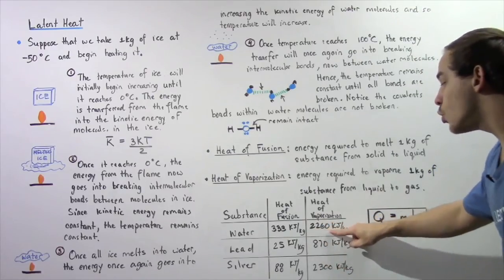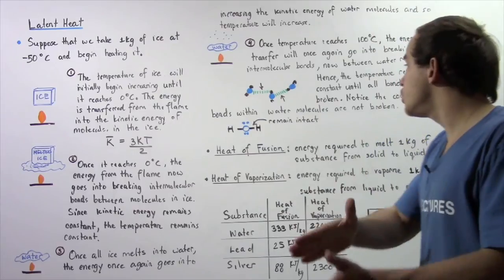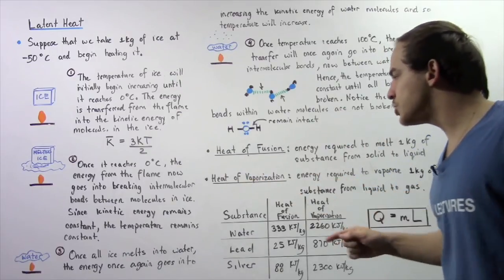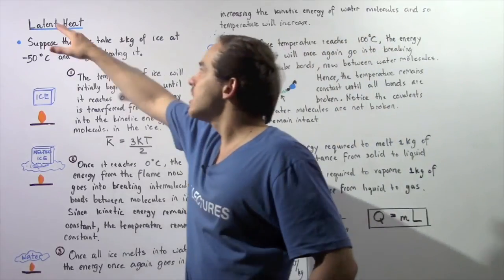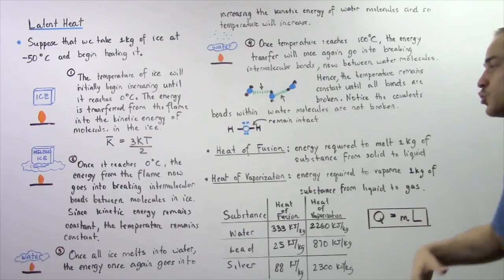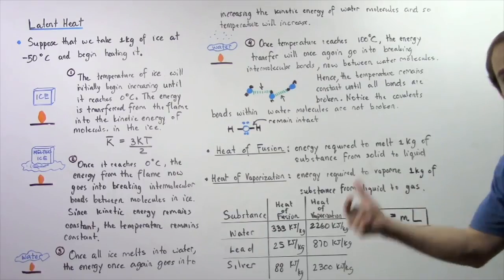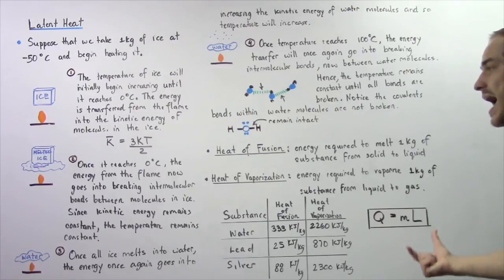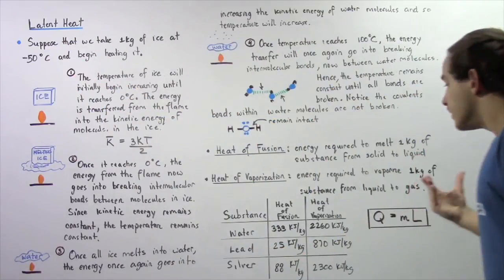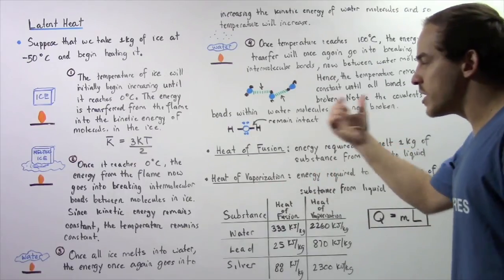It takes 2,260 kilojoules of energy to transform one kilogram of water from liquid to the gas state. These two concepts — the heat of fusion and the heat of vaporization — are collectively referred to as the latent heat. To determine the amount of energy required to melt or vaporize something, we use the formula: Q equals the product of the mass and L, where L refers to the latent heat, which can be either the heat of fusion or the heat of vaporization.